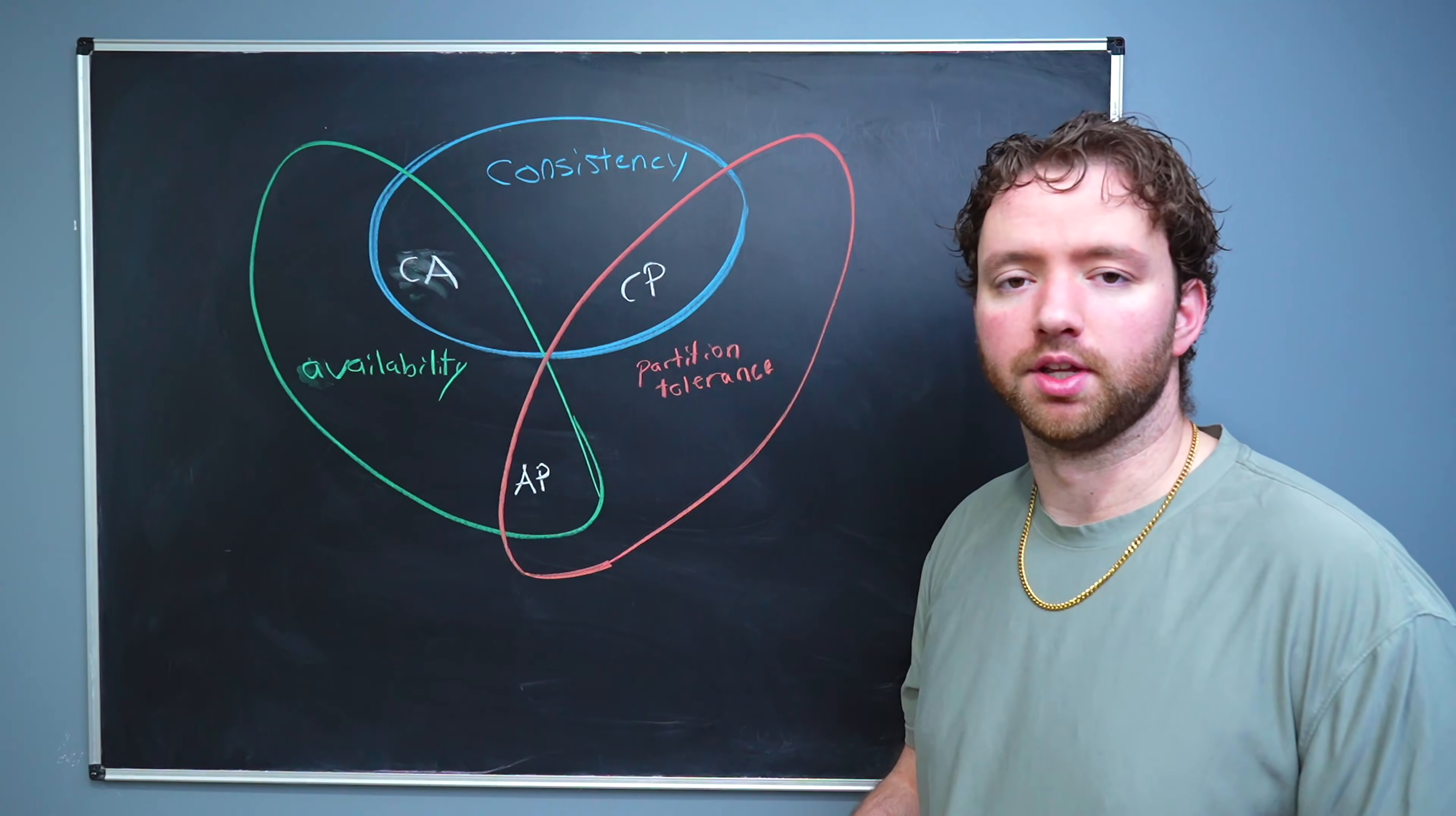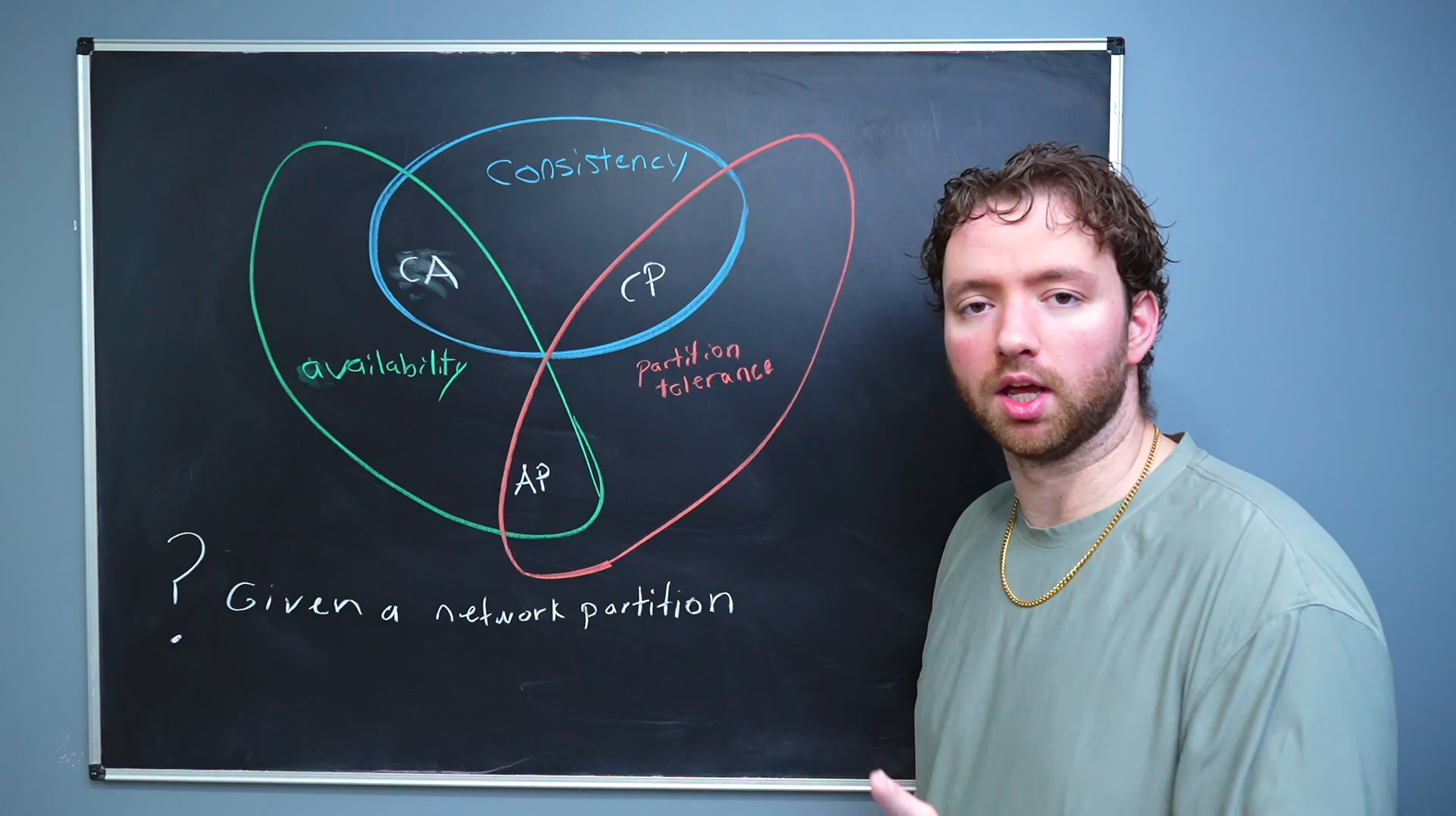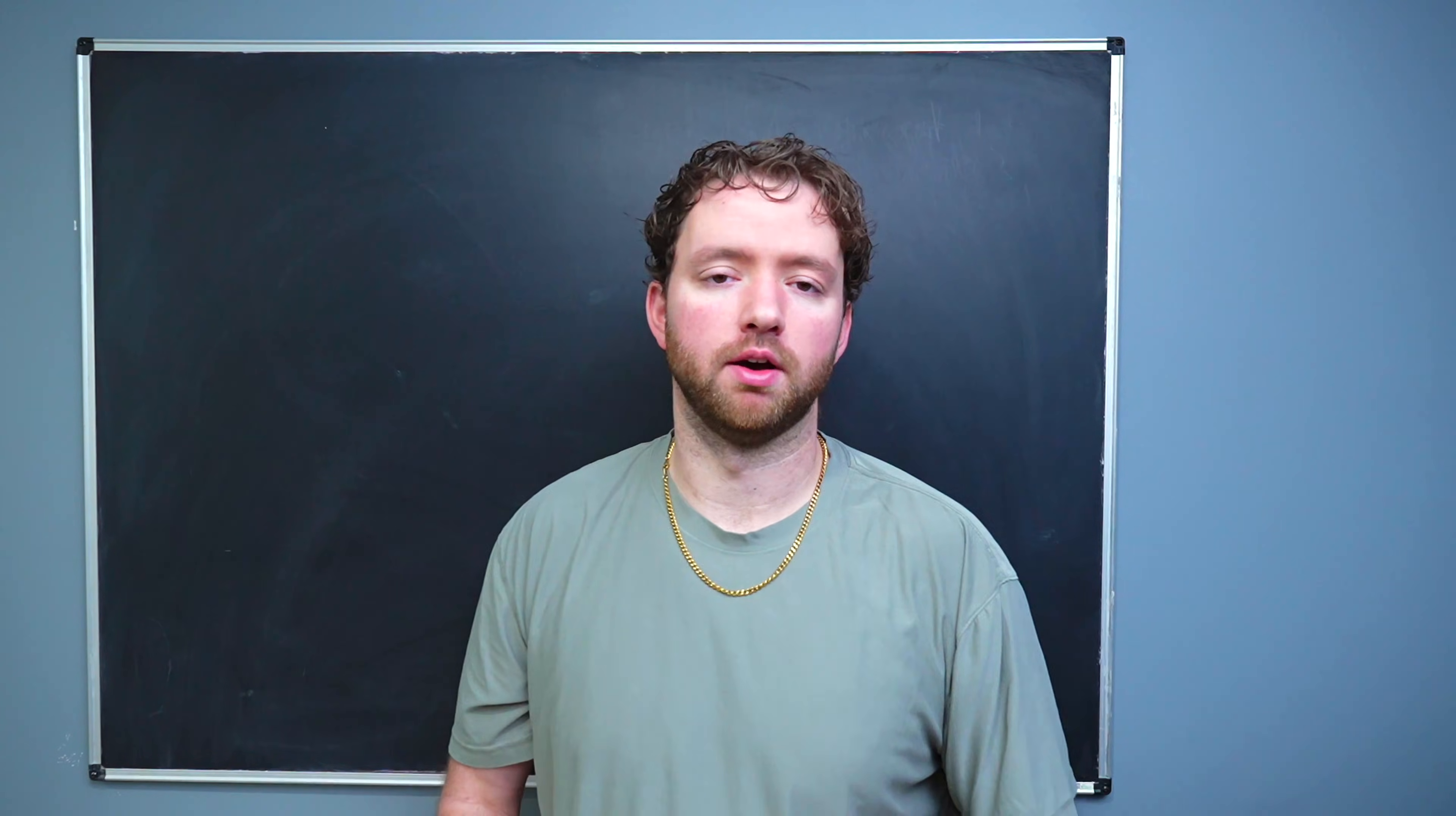So the summary of all of this and the question that you can ask yourself that will help you understand CAP theorem, as well as what type of database system to choose is if you're given a network partition, which again is an inability for nodes to communicate between each other. Do you choose consistency, bringing the system offline because you don't want to serve outdated data? Or do you prioritize availability, giving them a response, but potentially outdated data? So that's an overview of the CAP theorem.